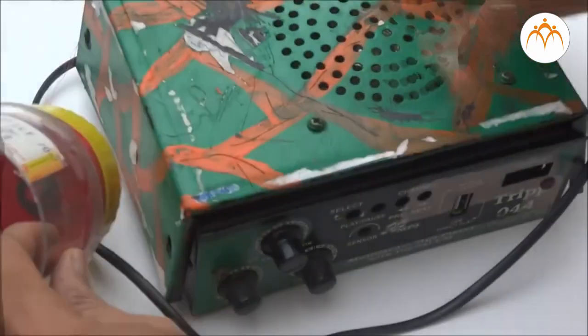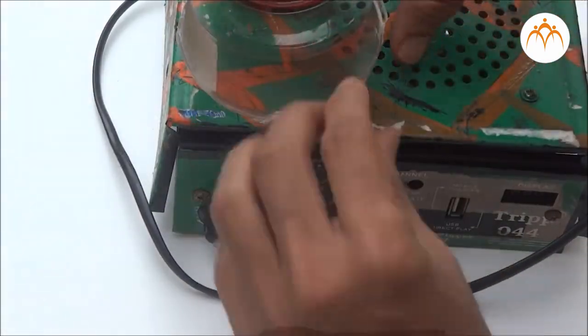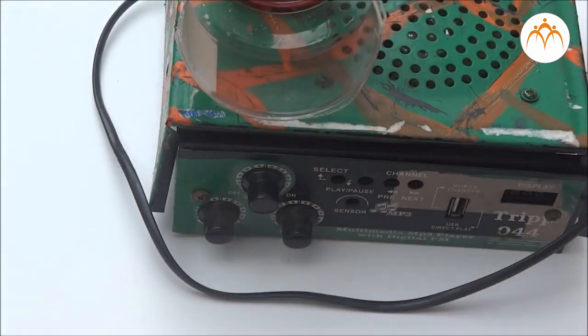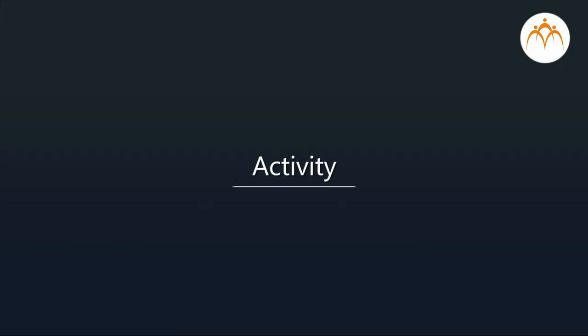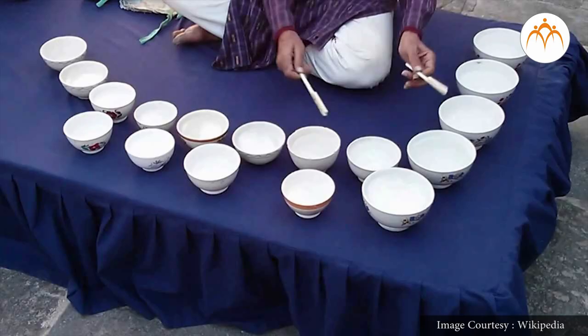Try building this yourself. Activity: with the help of water and containers of different types — like metal, glass, porcelain, and earthen pots — construct a Jalataranga.